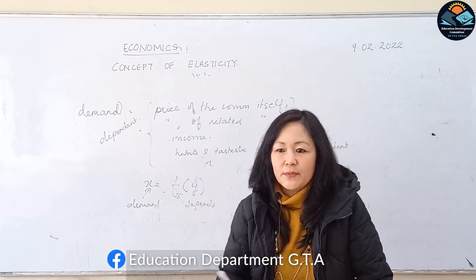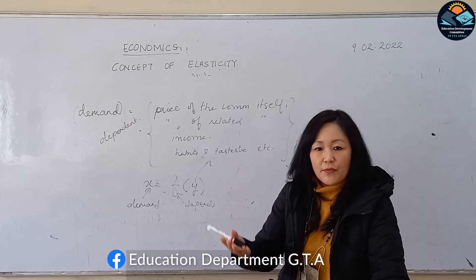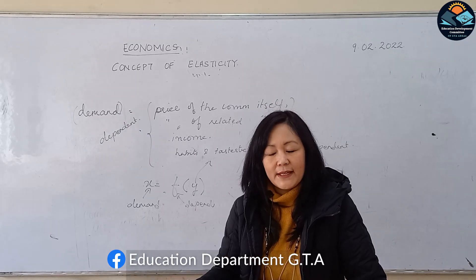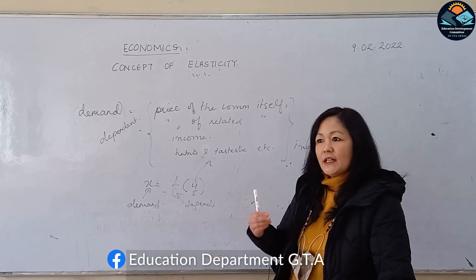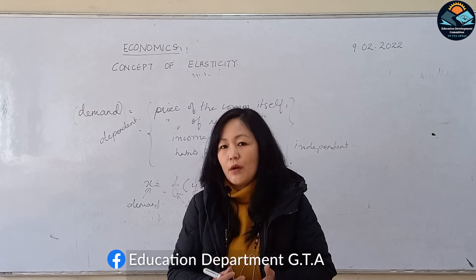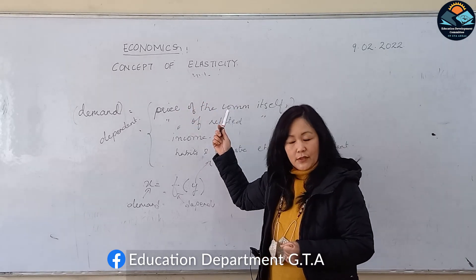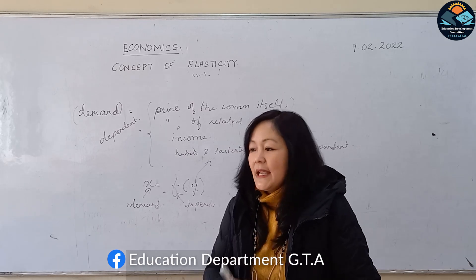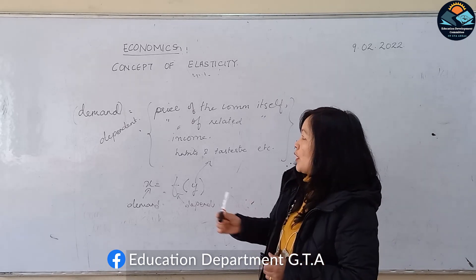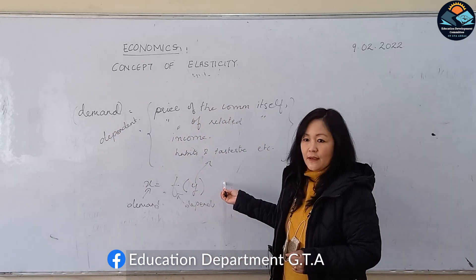We said that whenever price increases, demand for the commodity decreases. Whenever there is an increase in income of the consumer, demand for normal goods increases. But it was not clear — the degree of change, the responsiveness of change of demand due to the change of these factors, is dealt with in this chapter: the concept of elasticity. The elasticity of demand helps us understand the degree of responsiveness or the change of demand.